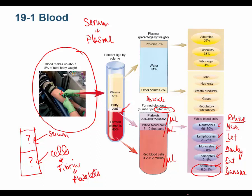Basophils are extremely rare — only about 0.5–1% of white cells. In thousands of peripheral blood smear analyses done in the lab, counting 100 white cells per slide, a basophil was so rare it was exciting to see one. Typically in the lab we count 100 white blood cells to perform a differential.